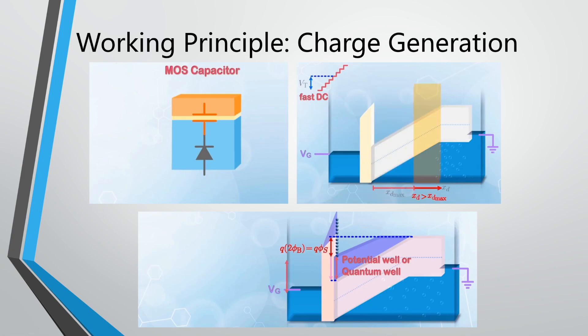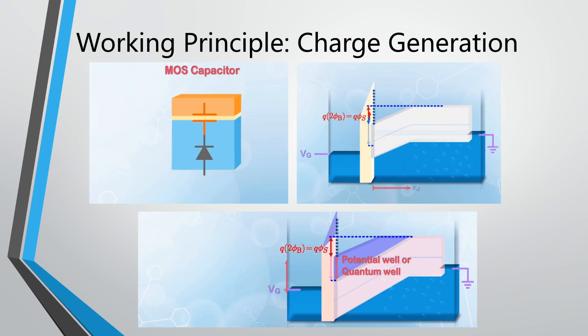Thermal equilibrium can be simply understood as an equal number of charges at the two sides of the oxide capacitor. The surface potential in the silicon near the oxide is lower than elsewhere. If we leave this device long enough, electron-hole pairs will be generated and form the inversion layer. In a MOSFET, the inversion layer can be formed very fast because of electron supply from the source terminal, but we don't have that here. Therefore, before generation happens, a quantum well is formed.